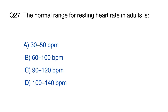Question 27: The normal range for resting heart rate in adults is? The right option is option B, 60 to 100 BPM.